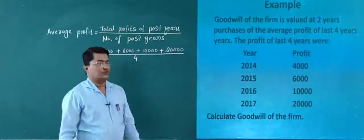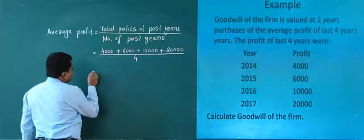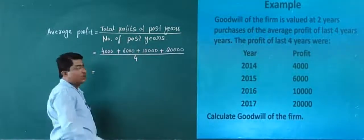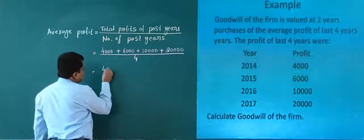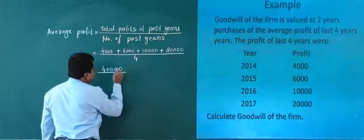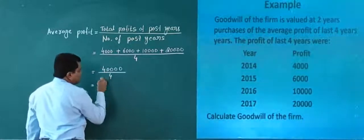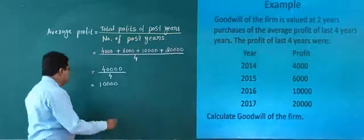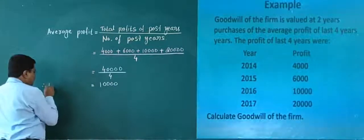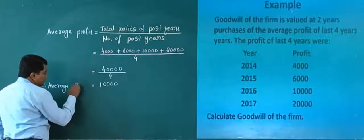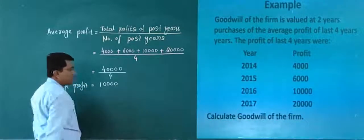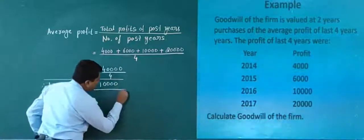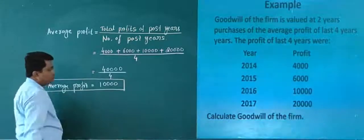What is the total of profit? 4,000 plus 6,000 is 10,000; 10,000 plus 10,000 is 20,000; 20,000 plus 20,000 is 40,000. So total profit is 40,000 divided by 4. The average profit is 10,000. This is your average profit — but not the goodwill.